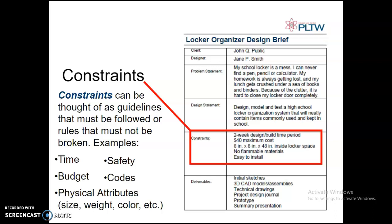Constraints can be thought of as guidelines that must be followed, or rules that can't be broken. For example: time, safety, codes, budget, and physical attributes like size, weight, color, etc. In our example, the constraints are a two-week time period — meaning it needs to be complete in two weeks — a $40 maximum cost, a size constraint, no flammable materials, and it needs to be easy to install.